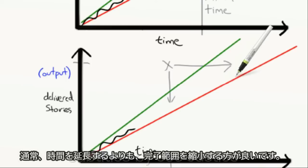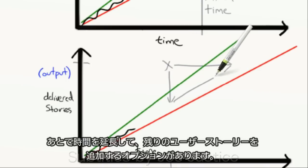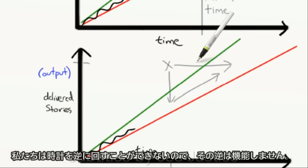It's generally better to reduce scope than to extend time, because if we reduce scope first, we still have the option to extend the time later and add the rest of the stories. Vice versa doesn't work, because we can't turn the clock backwards. Time is rather annoying that way.